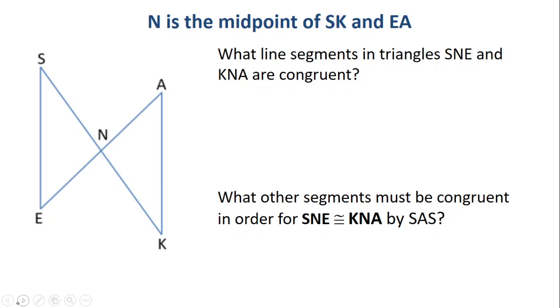The big difference here is that we can pick up the angle. So if we just look at this picture, just like yesterday, we have the midpoint of SK and the midpoint of EA. So being the midpoint of SK means that SN and NK are the same.